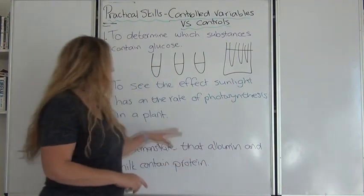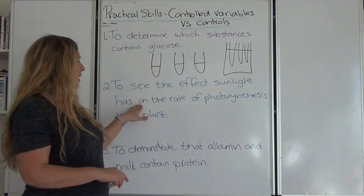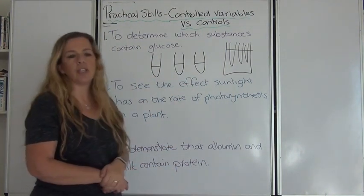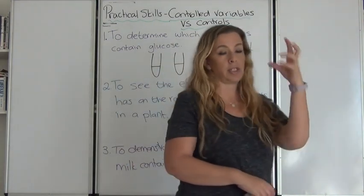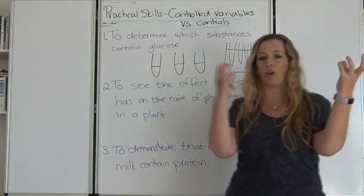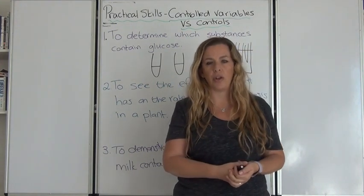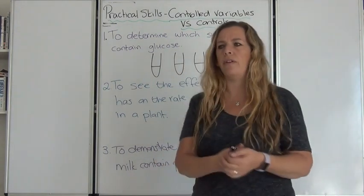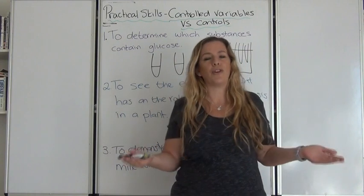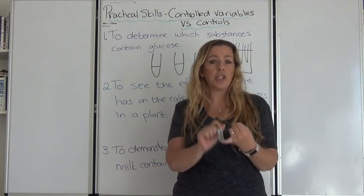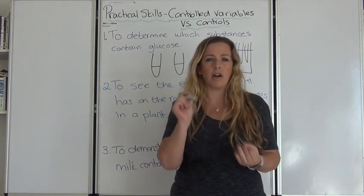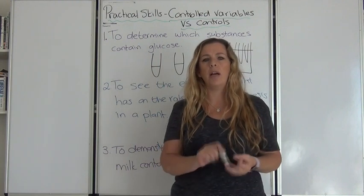Let's look at the next one. To see the effects of sunlight on the rate of photosynthesis in a plant. You've got your light source, your plant, and you want to see how much photosynthesis occurs. What are your controlled variables? Everything else needed for photosynthesis. The temperature of the room, the carbon dioxide concentration, the amount of water the plants have.